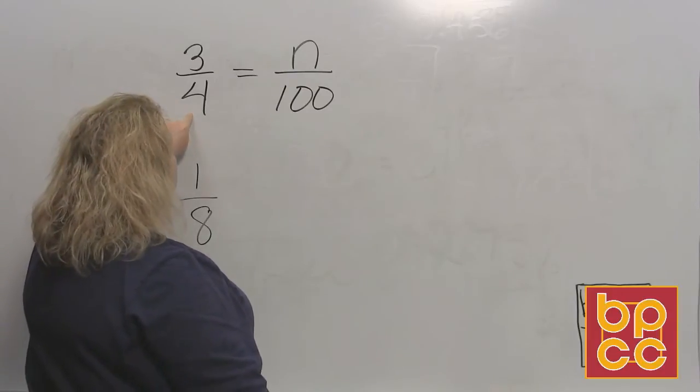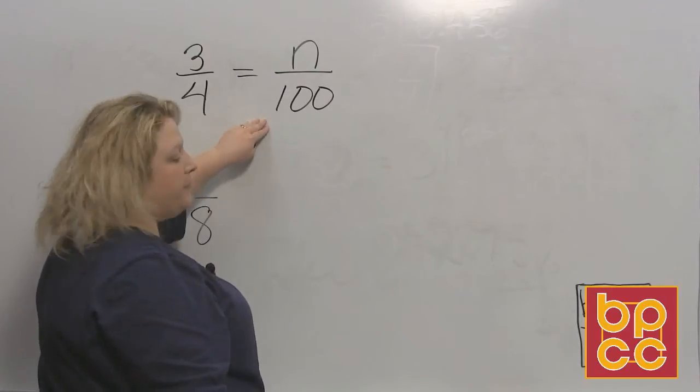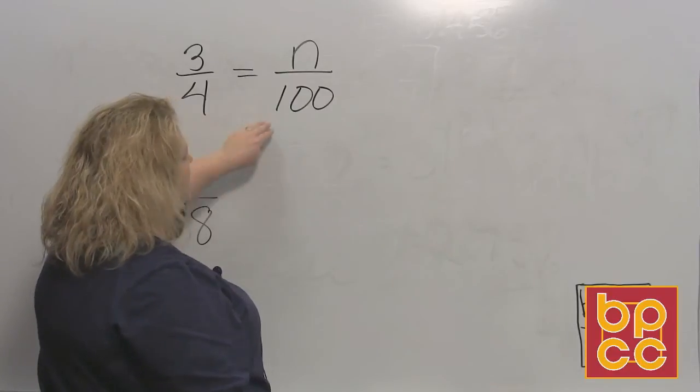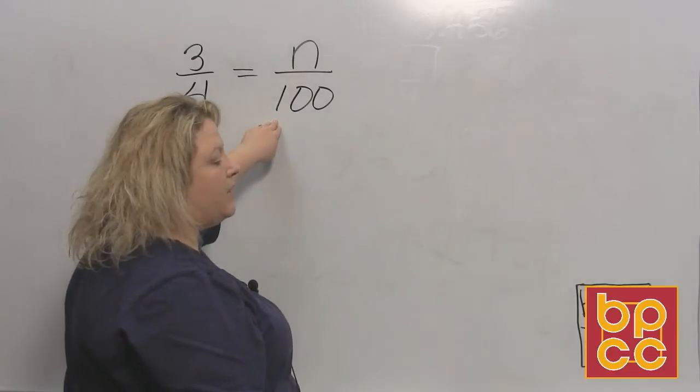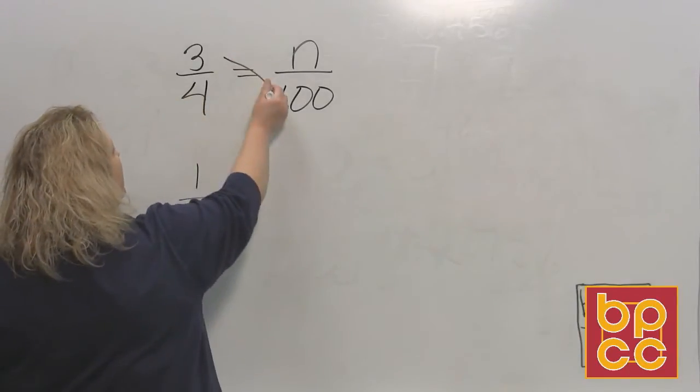Now why am I doing it this way for this particular one? The reason why is because 4 divides into 100 an even number of times. If you have that scenario where you can divide the first fraction into 100 an even number of times, this is the fastest way to get your answer. So you're going to do cross products.